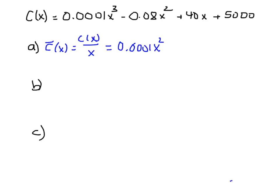When we divide the second term by x, we get -0.08x. 40x divided by x is 40, and 5000 divided by x is 5000/x, but I'm going to write it as 5000x⁻¹ because it'll be easier to take the derivative. I can use my power rule that way. So there is the average cost function C bar.